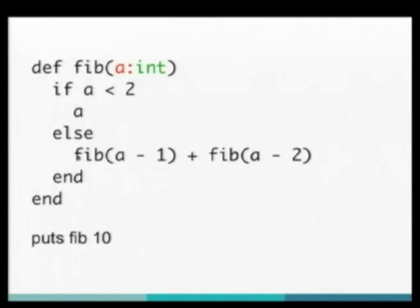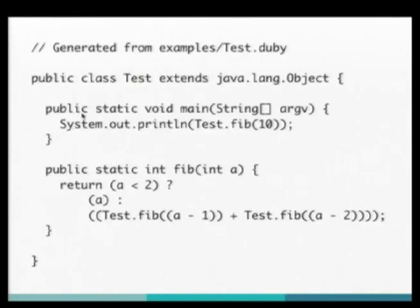It infers your return type. Here from A, it can tell that A is an integer, so this function is going to return an integer. Then when you run the Doobie compiler, it can go ahead and generate this Java for you. You can also have it just directly generate a class file.